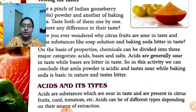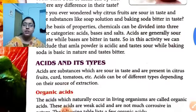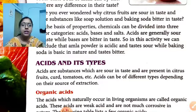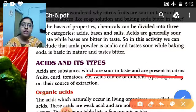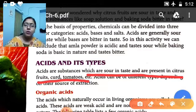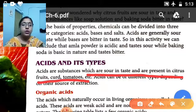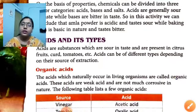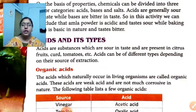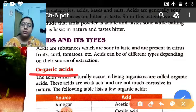Now come to the topic acids and its types. Acids are substances which are sour in taste. They are found in citrus fruits, curds, tomatoes, tamarind, spinach, and even in ant stings. When an ant or honeybee bites, they release an acid. Acid can be of different types depending on their source of extraction. Depending on the source, acids are of two types: organic acids and inorganic or mineral acids.